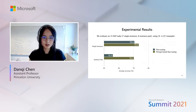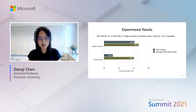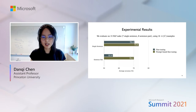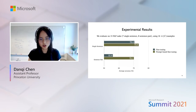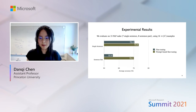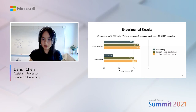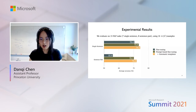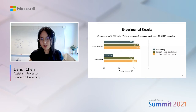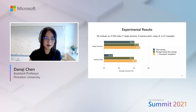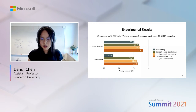We evaluated LM-BFF on 15 popular NLP tasks, including seven single-sentence tasks and eight sentence-pair tasks, using only 16 examples per class (typically 32 training examples total). Prompt-based fine-tuning with manual prompts already greatly outperforms standard fine-tuning by a large margin, especially on sentence-pair tasks. Replacing manual templates with our automatically searched templates in LM-BFF achieves comparable or even better results, and they are much easier to obtain. Incorporating demonstrations further brings significant improvements.